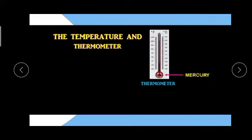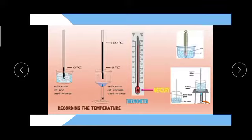Temperature and thermometer. You can see in thermometer there is mercury used. You can see recording of temperature. Mixture of ice and water: how much temperature is measured in ice? 0 degrees Celsius. How much temperature is measured in mixture of steam and water? It is 100 degrees Celsius.